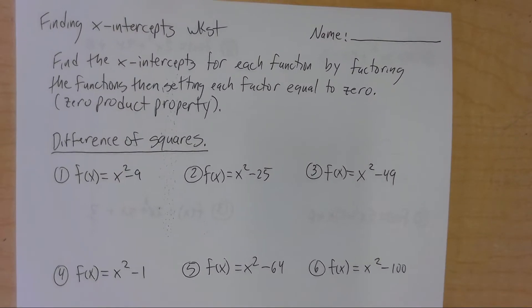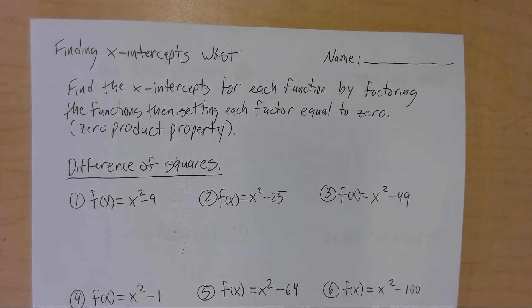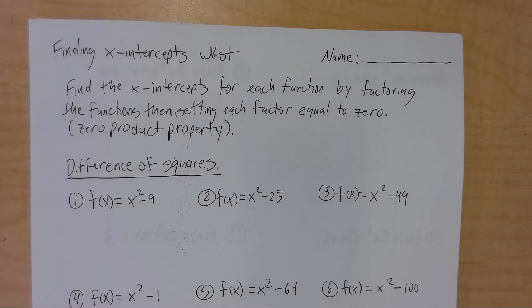All right, welcome to the worksheet on finding x-intercepts. So it says find the x-intercepts for each function by factoring the functions and setting each factor equal to 0, which is called the zero product property.